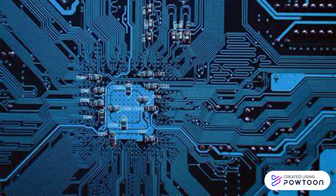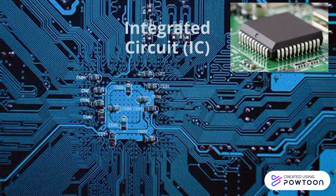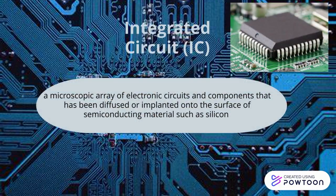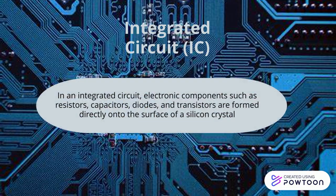Now we will discuss about semiconductor technology, where I choose integrated circuits, or IC. An IC is a microscopic array of electronic circuits and components that has been implemented onto the surface of a semiconductor material such as silicon. Electronic components such as resistors, capacitors, diodes, and transistors are formed directly onto the surface of the silicon crystal.